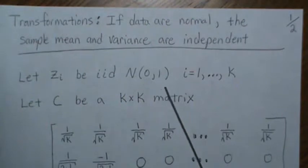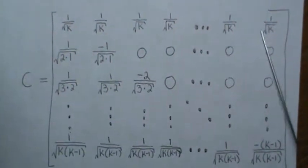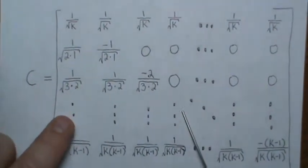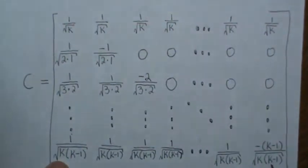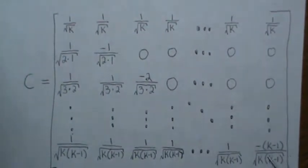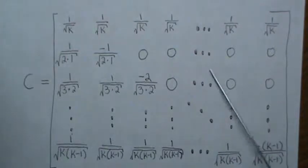We're going to let the z's be iid standard normal. We'll create a k-by-k matrix in a unique way: the first row has all the same element, 1 over √k. The second row has two elements, the third has three, and so on up to the kth row. The diagonal elements (not counting the first row) are −1, −2, −3, up to −(k−1), with specific denominators. This is our C matrix, and we let the random vector y = Cz.